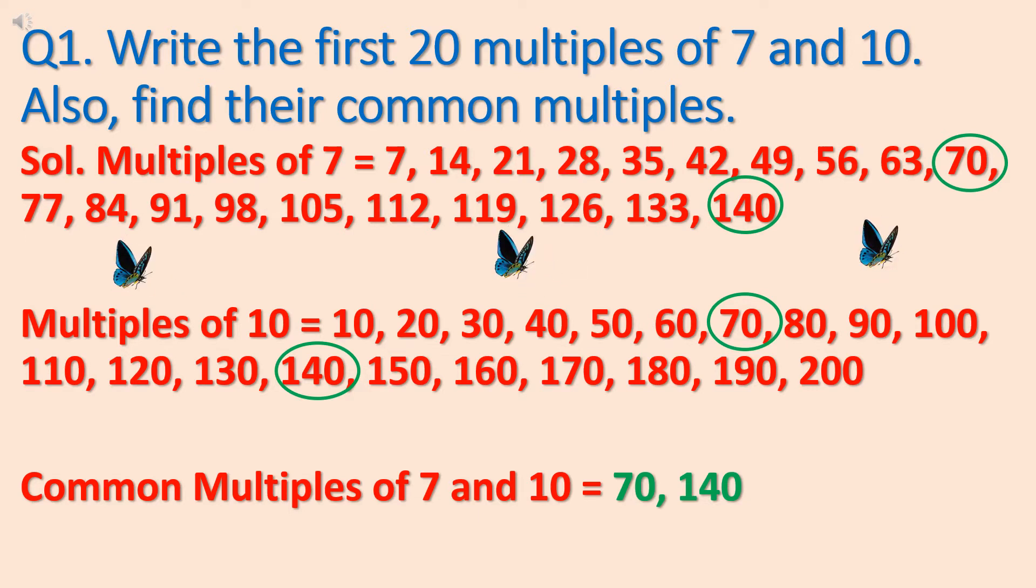For this, first of all, we will write multiples of 7. First 20 multiples of 7. And you know now how to find out multiples. You have to multiply 7 by 1 to 20. You have to multiply 7 with the numbers from 1 to 20.